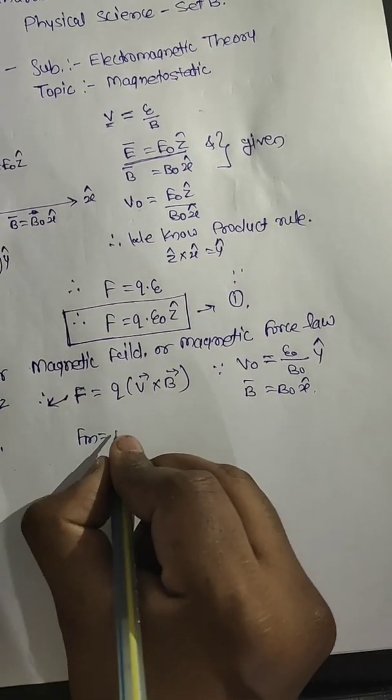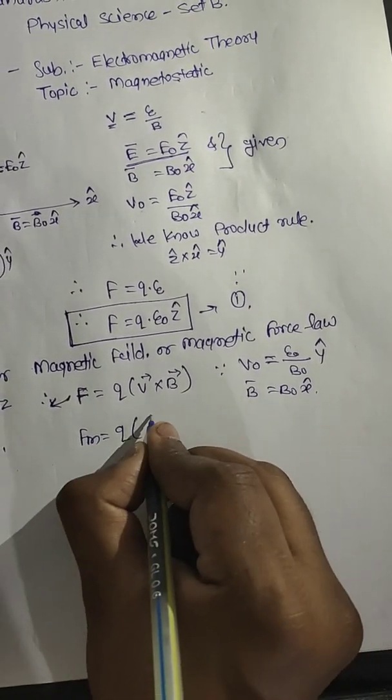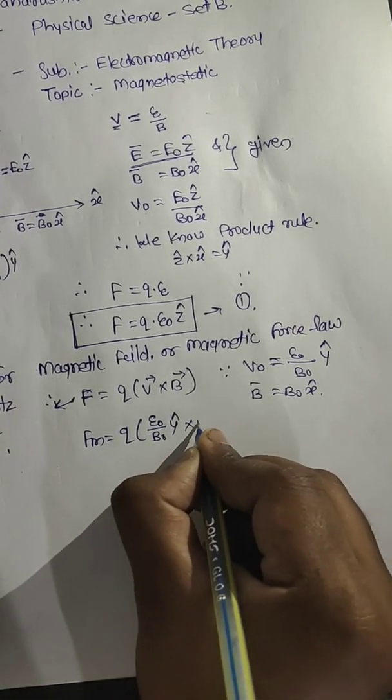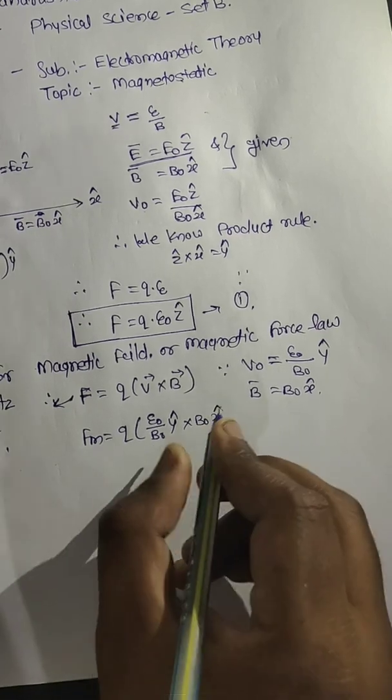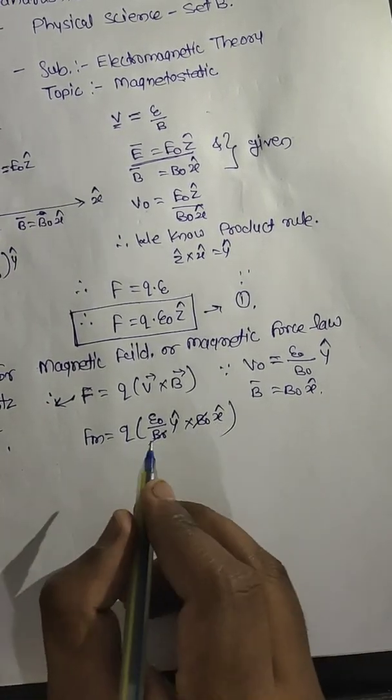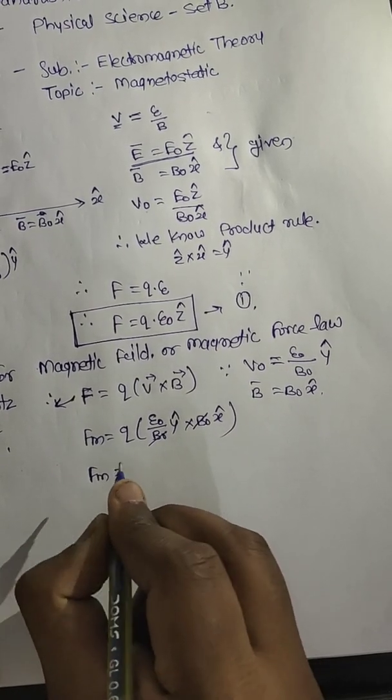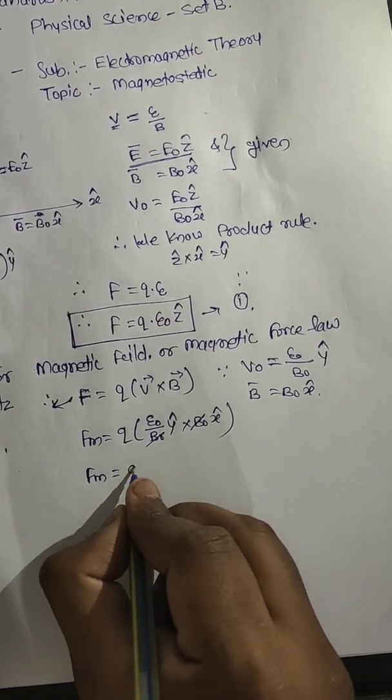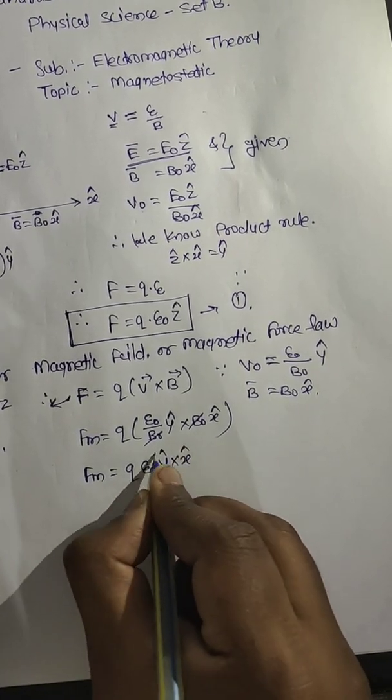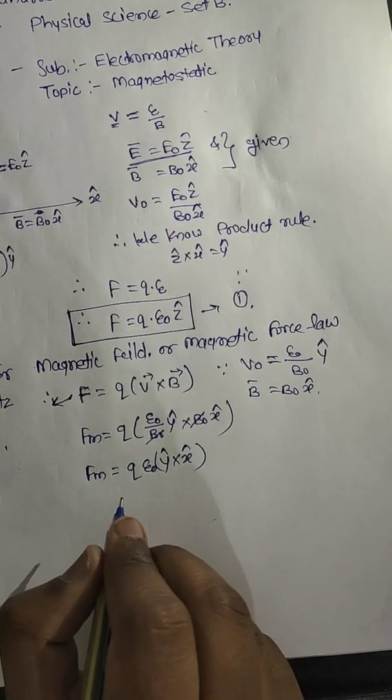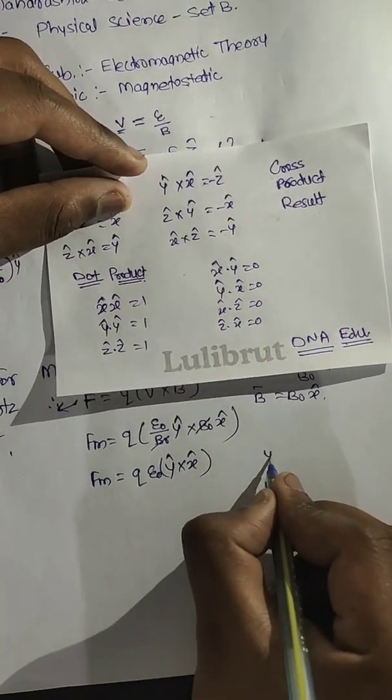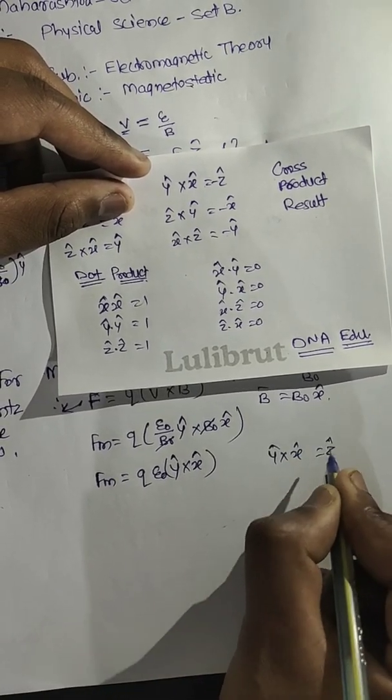F for magnetic force is equal to Q into V₀, E₀ upon B₀ in x cap direction. So this B₀ is cancelled. Fm force of magnetic force law is equal to Q into E₀ in y cap into x cap. So according to what we know, y cap into x cap is equal to z cap.